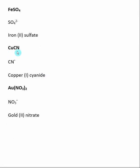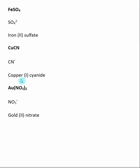For CuCN, we have a transition metal on the left, and the polyatomic present is CN⁻, the cyanide ion, which has a negative one charge. Because it is negative one, copper must have a plus one charge. The name of this compound would be copper(I) cyanide.